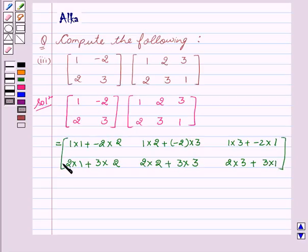This can be written as 1 minus 4, 2 minus 6, 3 minus 2. Then 2 plus 6, 4 plus 9, 6 plus 3.